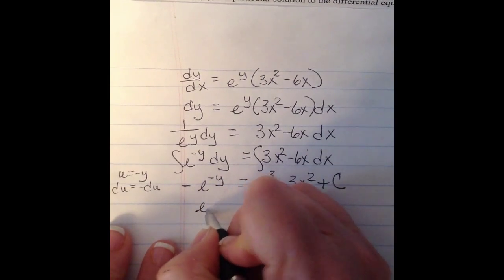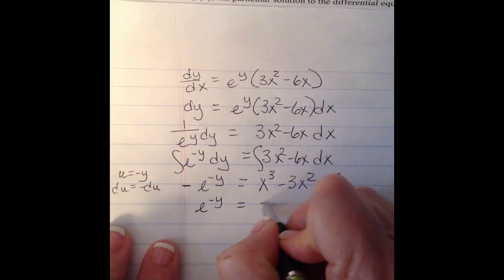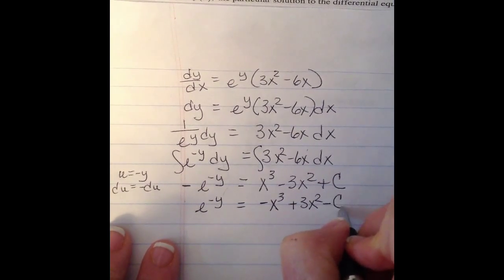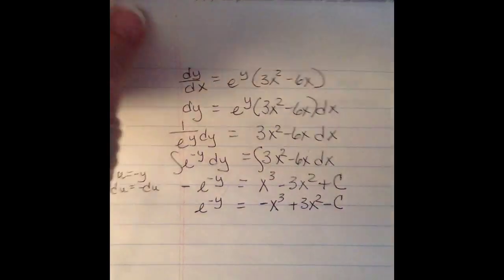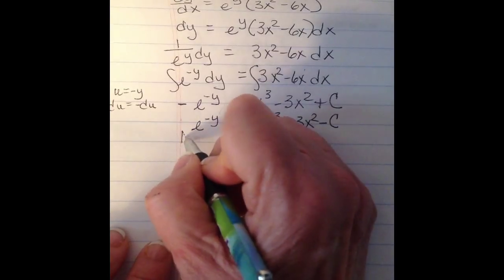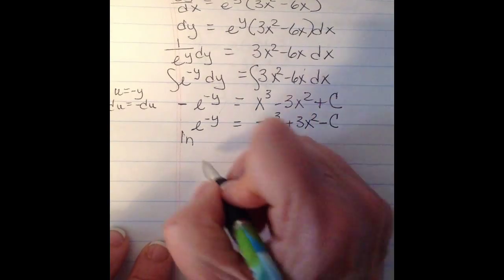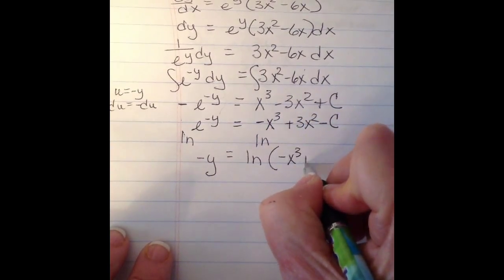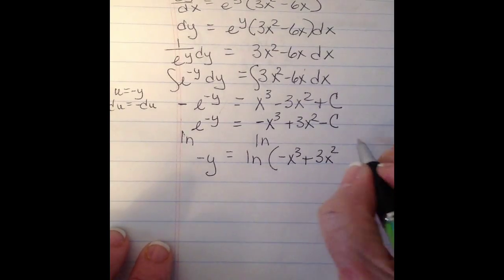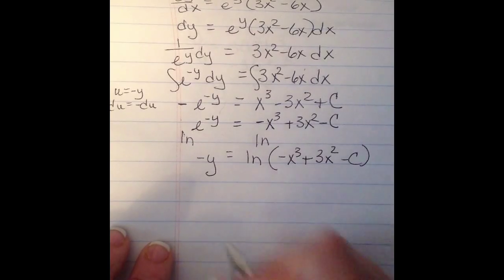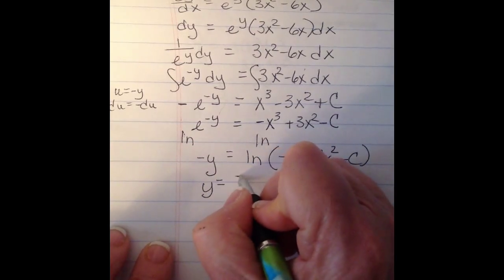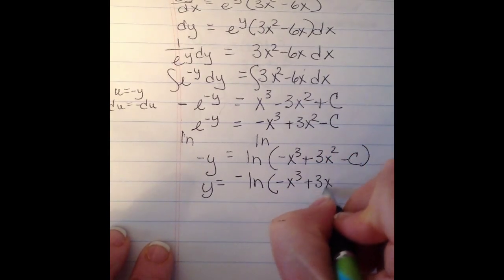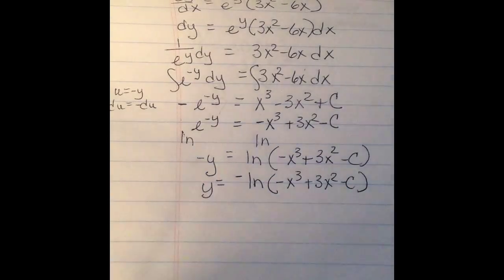I'm going to divide everything by the negative to get rid of that on this side. Now I'm going to take the ln of both sides. And that's our general solution.